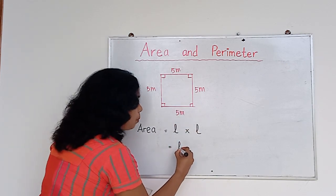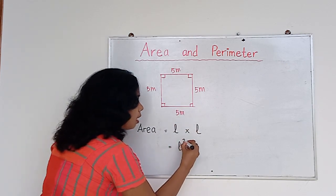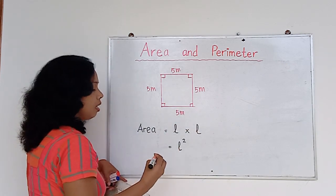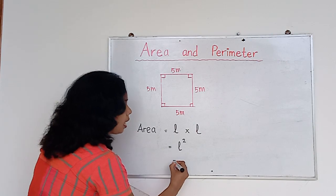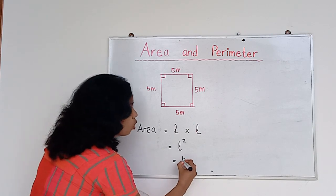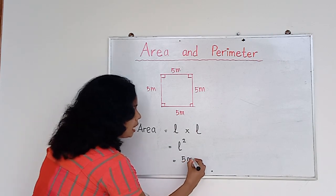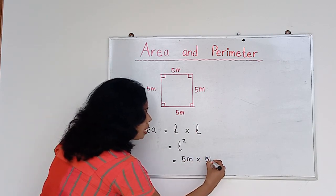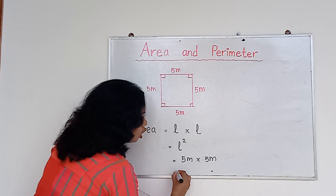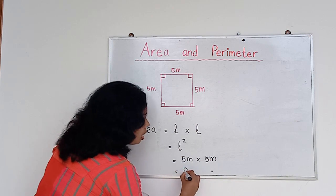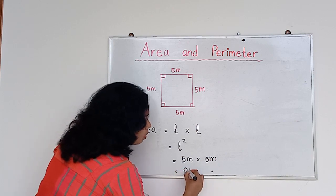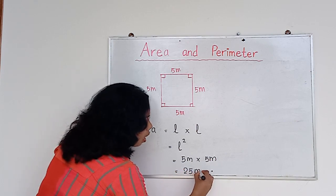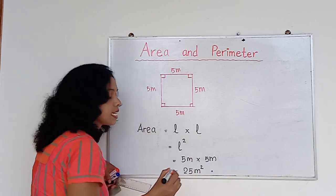So I can write it as: area equals 5 meters times 5 meters, which is 25 square meters.